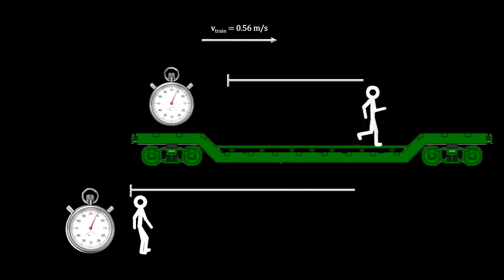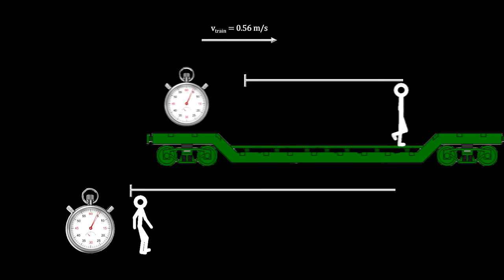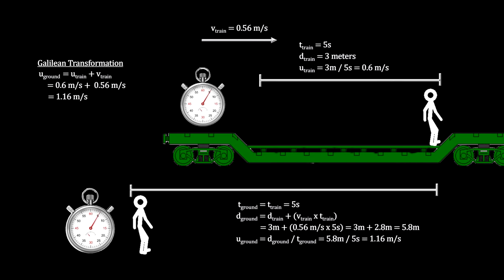Here we see the person walking on the moving train. We simply added his walking speed to the train's speed to get the speed seen by an observer on the ground.